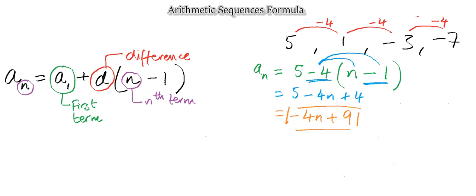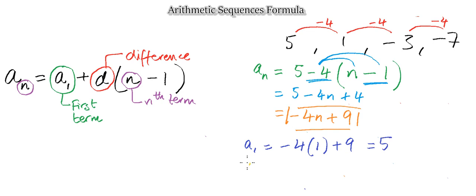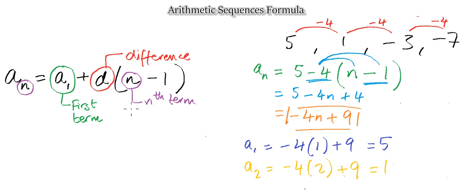Let's verify this expression. For the first term, a sub one: negative four times one plus nine equals minus four plus nine, which is positive five — correct. For the second term, a sub two: negative four times two plus nine equals minus eight plus nine, which is positive one — and we have one in the sequence. Very straightforward: remember the formula, plug in the numbers, be careful of the signs, and you'll get your expression.